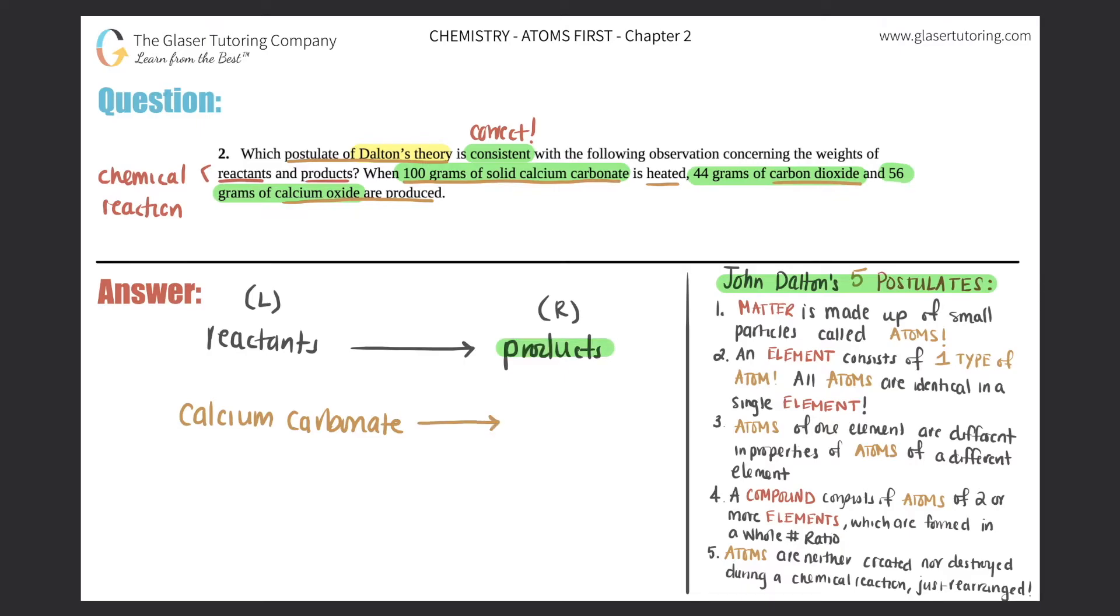So that means that they have to be products. So calcium carbonate was a reactant, and when it was heated, carbon dioxide and calcium oxide were produced. So I'm going to say carbon dioxide plus calcium oxide were produced.